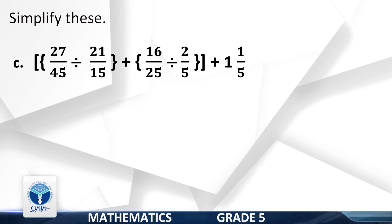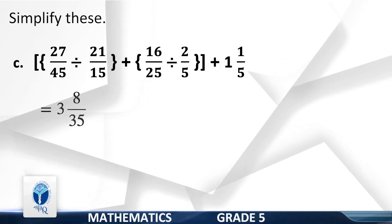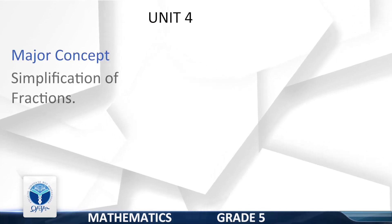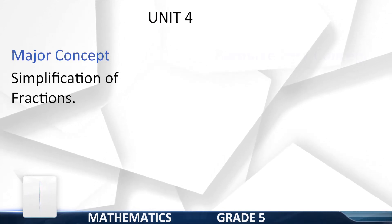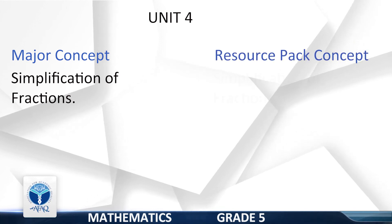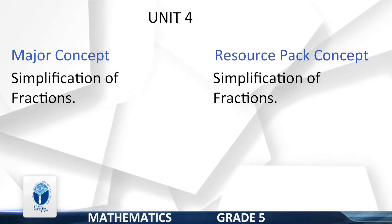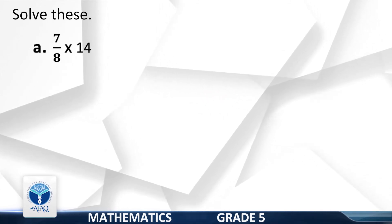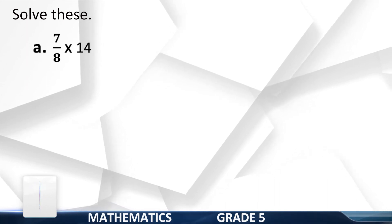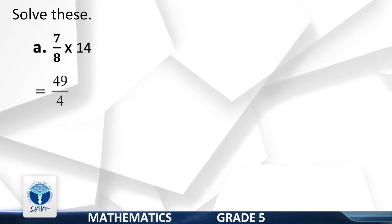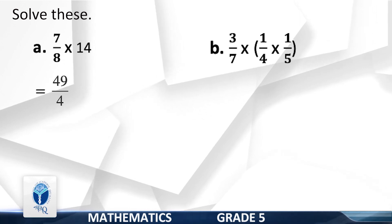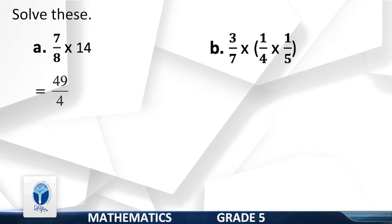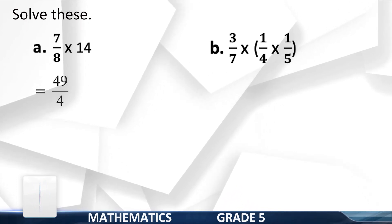Unit 4 — Major Concept: Simplification of Fractions, Page 72. Solve: 7/8 into 14 — your answer is 49/4. Part 2: 3/7 into (1/4 into 1/5) — your answer is 3/140.